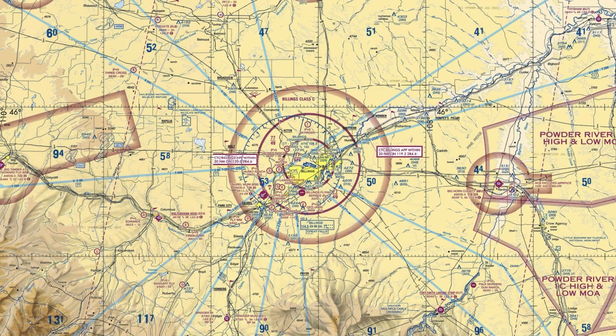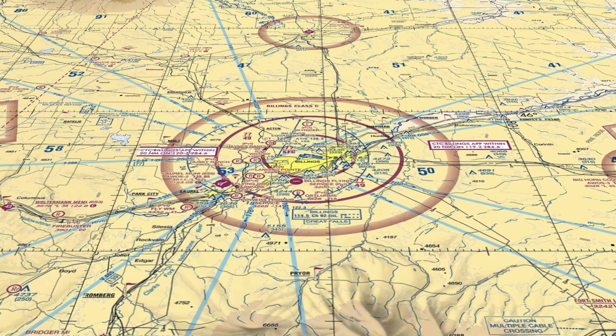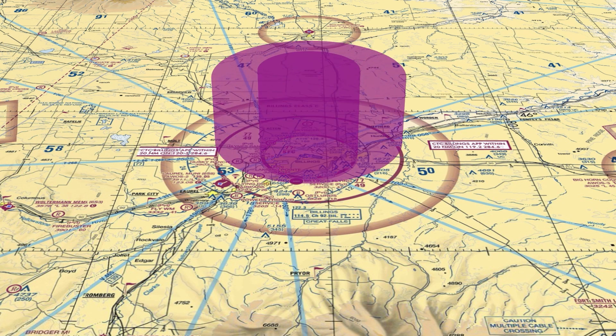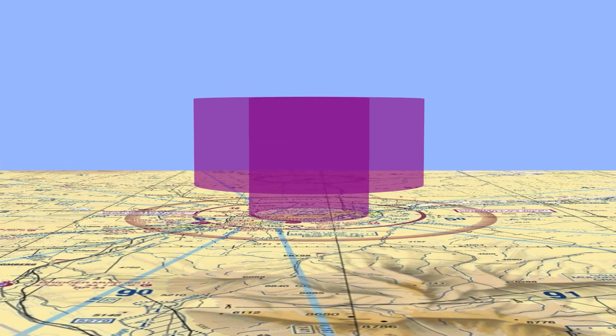You should also be aware of how each of the classes differ from one another. When you see Class C airports on the map, you can expect to only be dealing with the first two rings like we discussed with Class B, but not requiring the third tier.